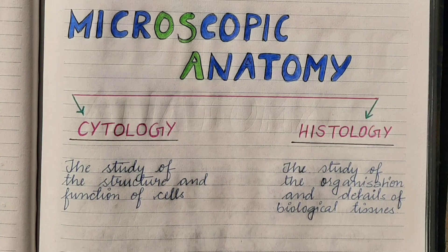The next topic is microscopic anatomy. Microscopic anatomy is broadly classified into cytology and histology. It is defined as the branch of anatomy that relies on the use of microscopes.